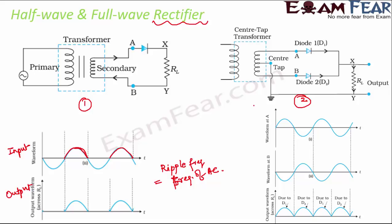In a full-wave rectifier, instead of one diode there are two diodes D1 and D2. During the positive cycle, D1 is forward biased and D2 is reverse biased, so we get an output. During the negative cycle, D1 is reverse biased but D2 is forward biased, so we again get an output. In every cycle, at least one diode is always forward biased.